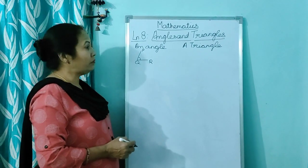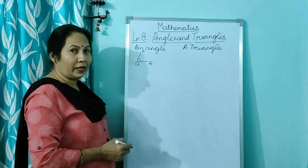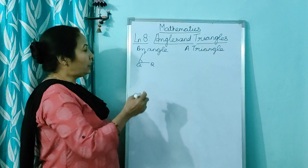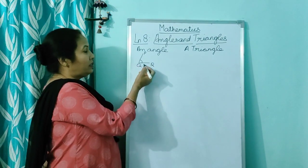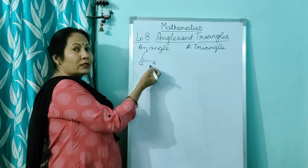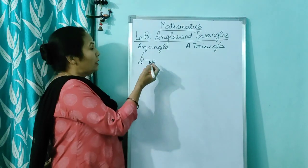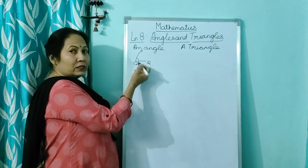Now children, I have explained you what is angle. In angle you have two lines which are also called as arms, and you have a vertex here.